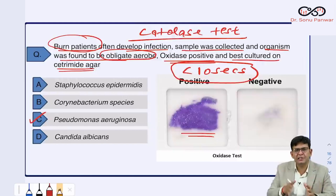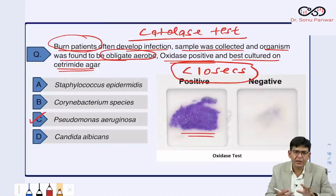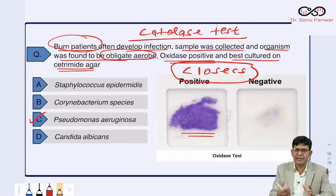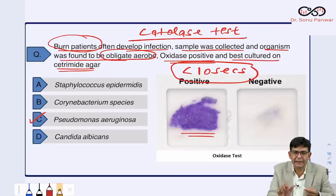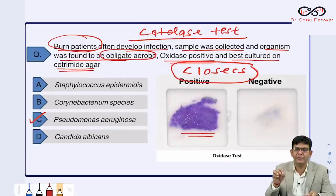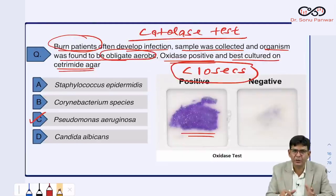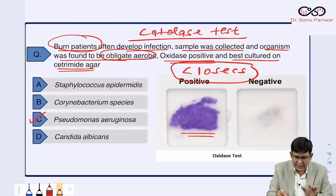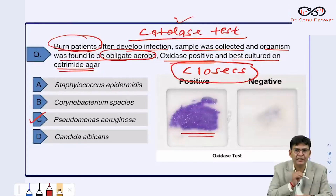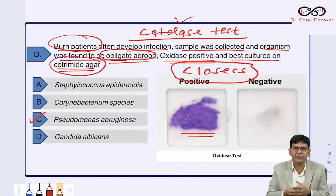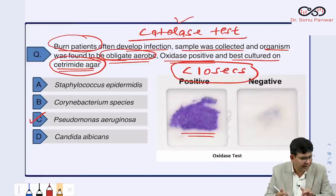This question reflects the style used in NEET and future exams. Important organisms will always appear in some form. The hints in this question — burn patient, obligate aerobe, oxidase positive, and cetrimide agar as the culture medium — all point to Pseudomonas. Questions may correlate with the oxidase test or the catalase test as well.